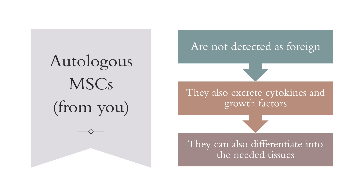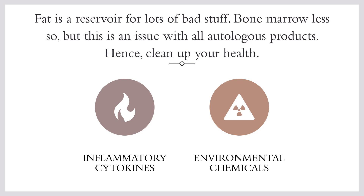Autologous cells from your own body are obviously not detected as foreign. They can excrete cytokines and growth factors, and they can also differentiate into the needed tissues because they're not taken out by your body. Be a little careful though, because fat — and to a lesser extent bone marrow — are reservoirs for lots of bad stuff. Organic environmental chemicals get caught in your fat, and the heaviest people have the worst inflammatory cytokines in their fat. Fat stem cell therapies work best in patients with the least fat and worst in patients with the most fat, because metabolic syndrome means lots of inflammatory cytokines lodged in the fat.